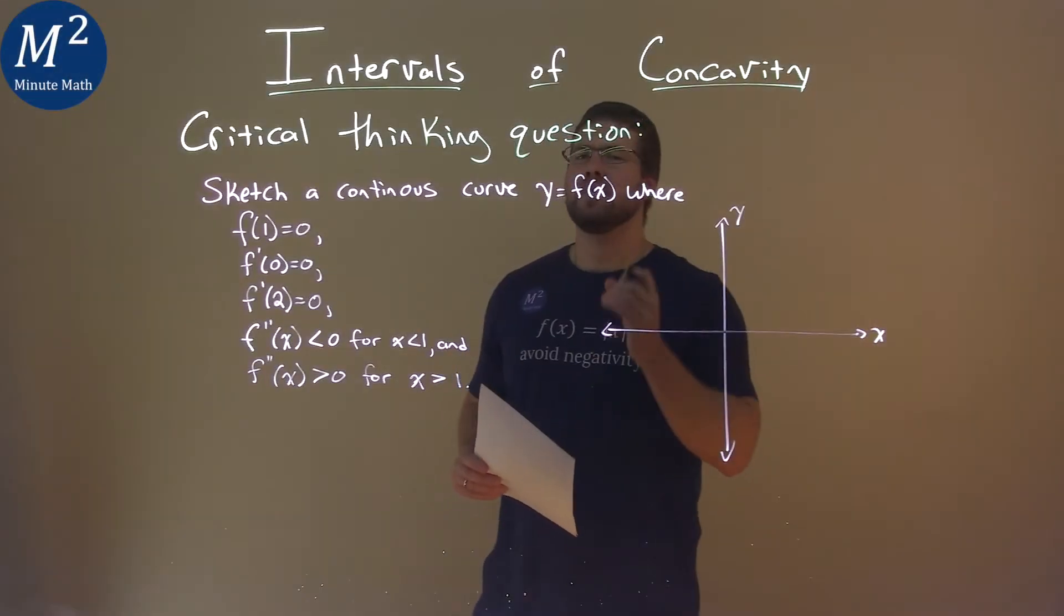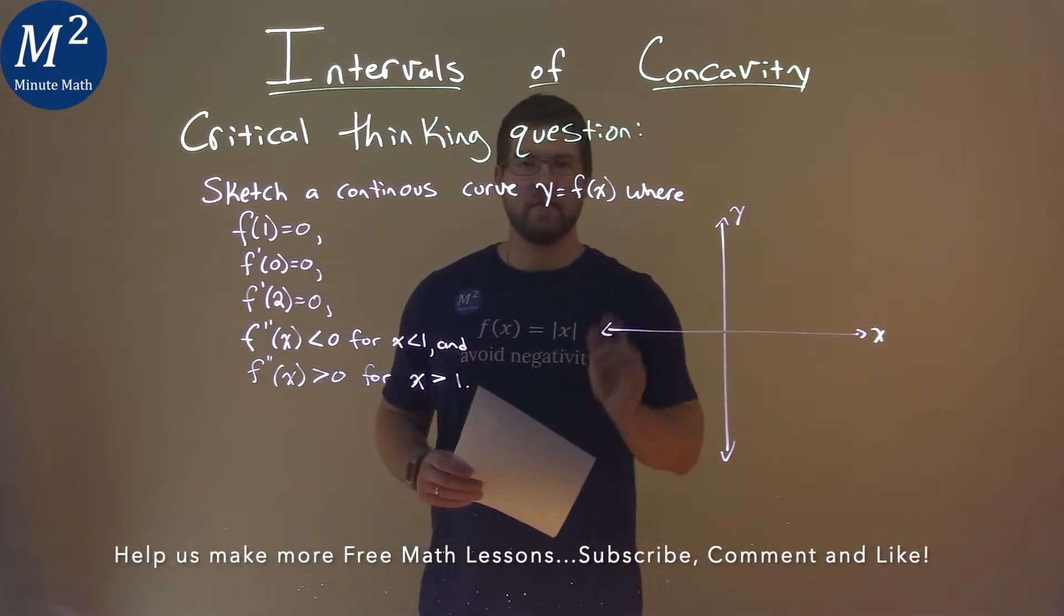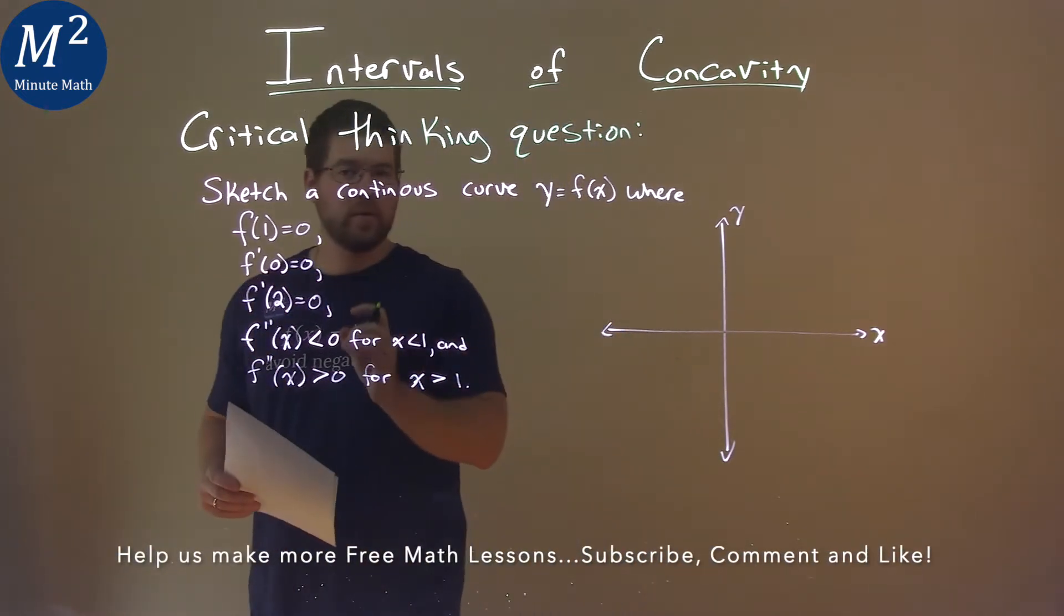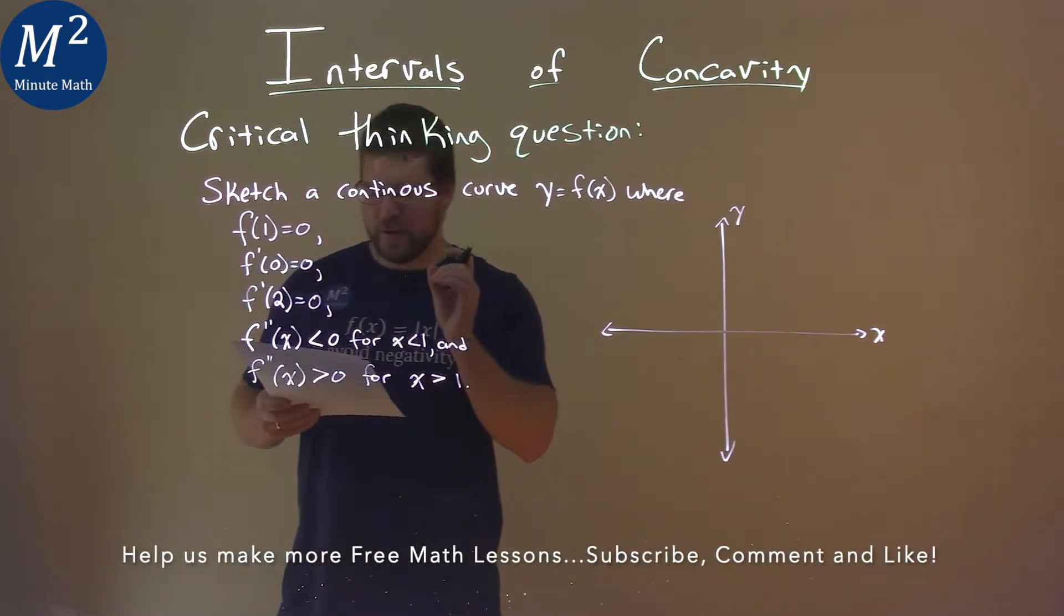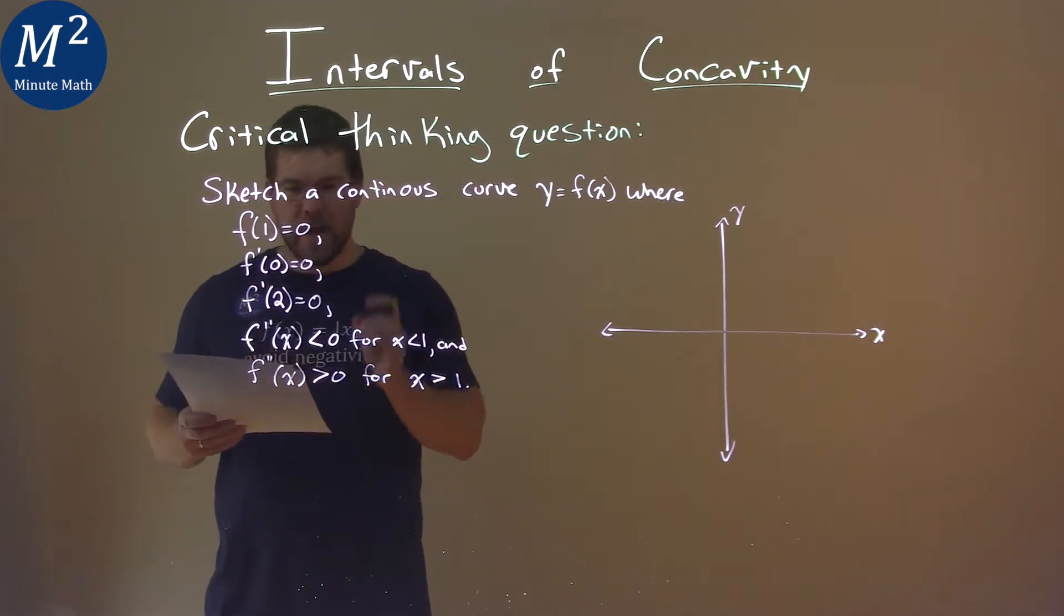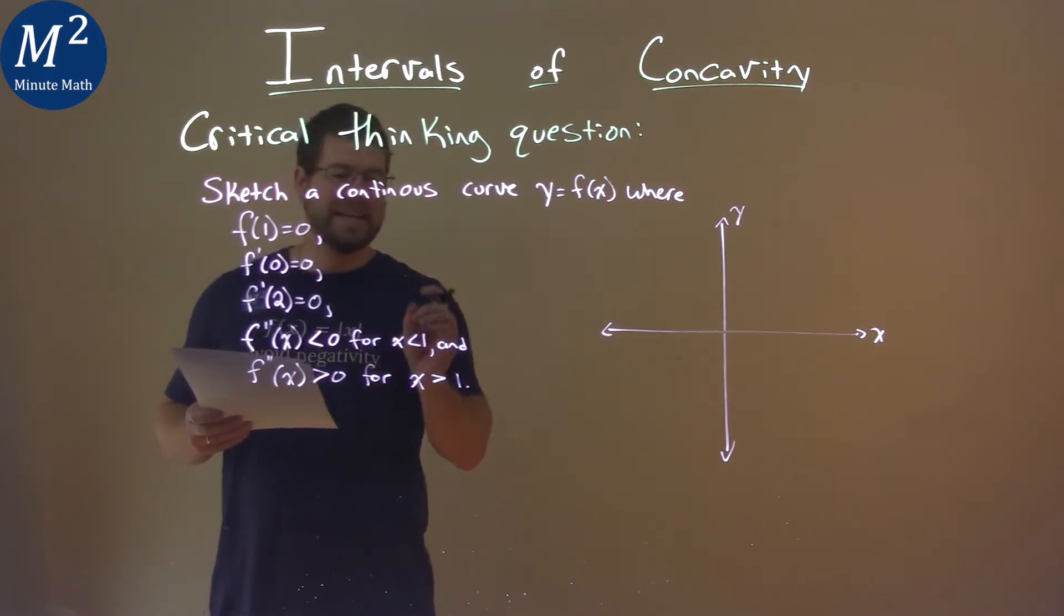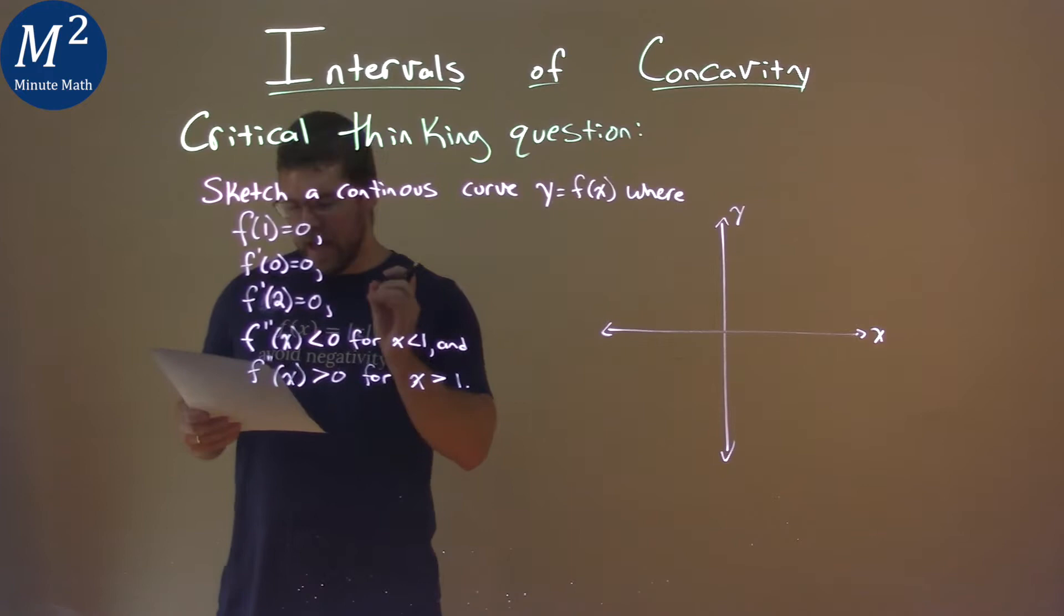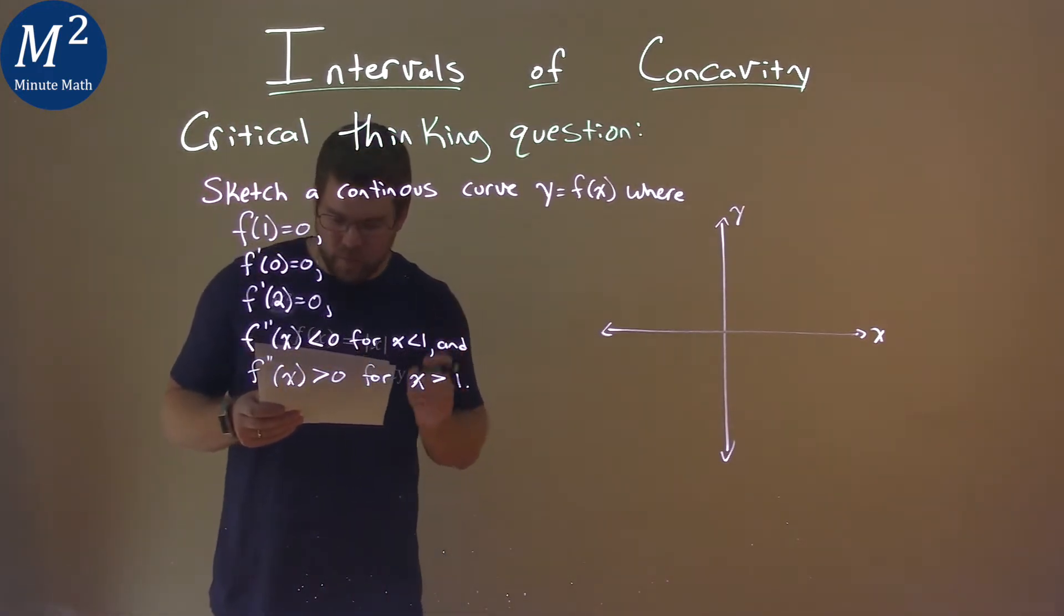We're given this critical thinking question. Sketch a continuous curve y equals f of x, where f of 1 equals 0, f prime of 0 equals 0, f prime of 2 equals 0, f double prime of x is less than 0 for when x is less than 1, and f double prime of x is greater than 0 for when x is greater than 1.